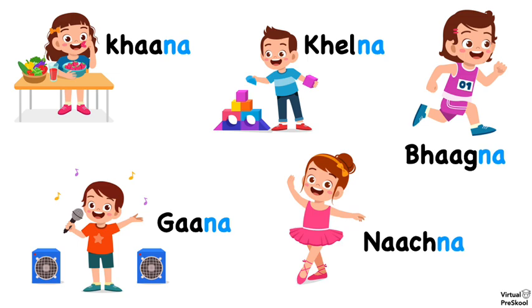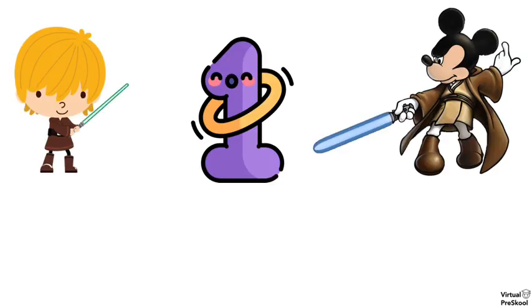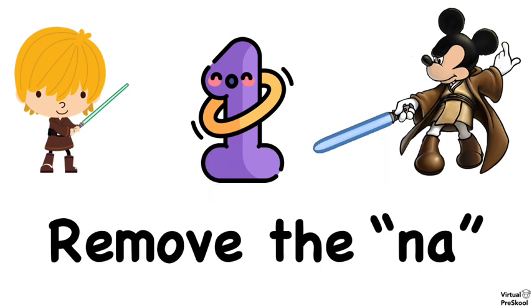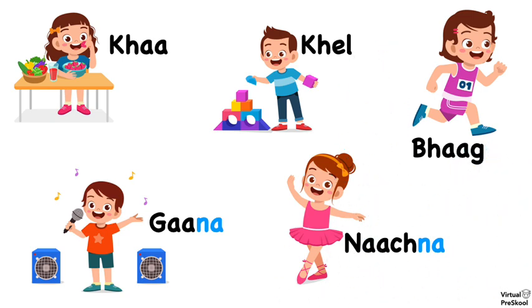But we don't want to just know the words — we want to use them in sentences. To do that, there are two things we have to do. Number one is to use your lightsaber to remove the na. You have to chop off that na from the end of the verb. So kana becomes ka, kelna becomes keel, bhaagna becomes bhaag, ganna becomes ga, and nachna becomes notch.